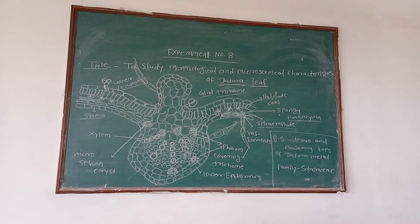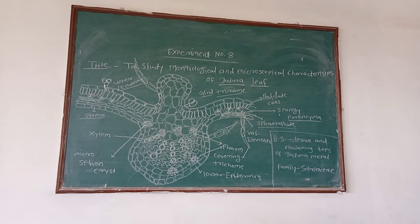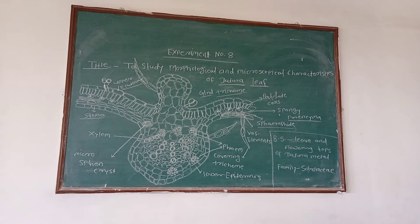The requirements for Experiment 8 — the TS of Datura leaf — include apparatus: microscope, watch glasses, camel hair brush, glass slides, coverslips, beaker, dropper, filter paper, forceps, test tubes, test tube holder, tripod stand, wire gauze, dissecting needle, sharp razor, etc. Chemicals required are chloroglucinol, concentrated HCl, and glycerin. The drug required is the Datura leaf itself.